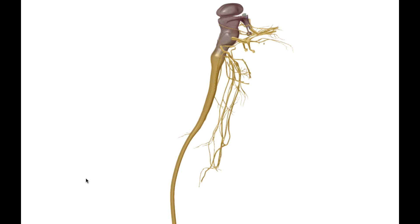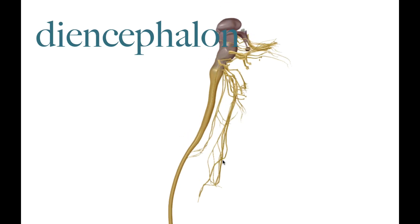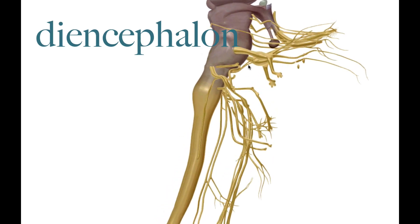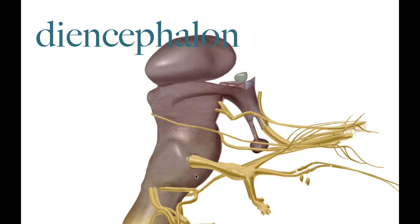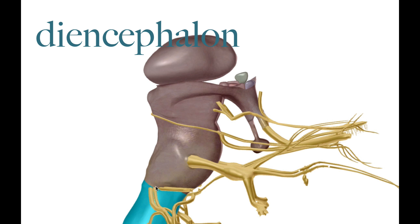Hey guys, welcome to another video for anatomy and physiology. In this lecture video we're taking a look at the diencephalon. The diencephalon is essentially the most superior aspect of the brainstem, which I have pictured here. Here you have the medulla, the pons, the midbrain, and then you have the diencephalon just sitting above it.